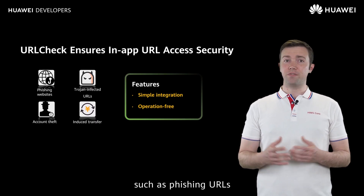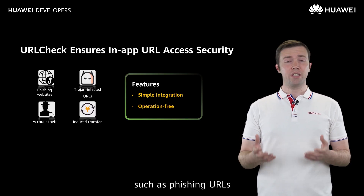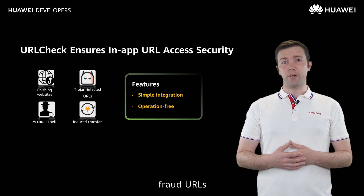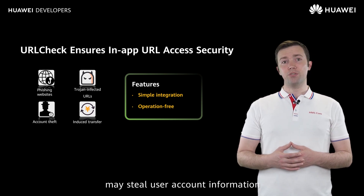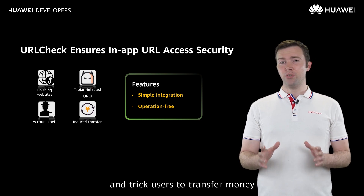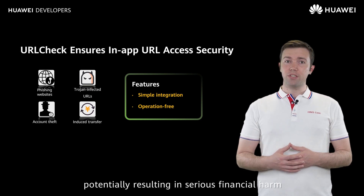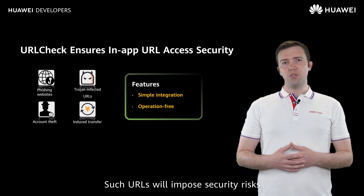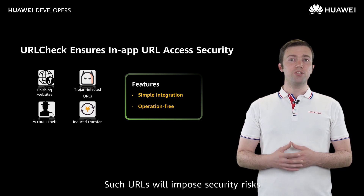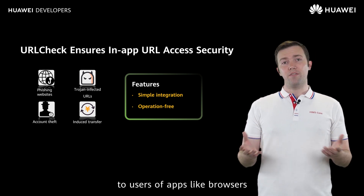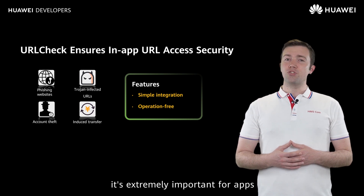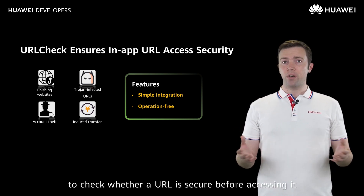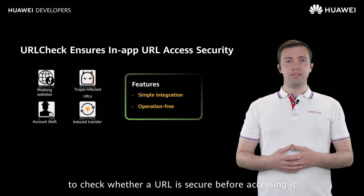Malicious URLs such as phishing URLs, fake URLs, and fraud URLs, and Trojan-infected URLs may steal user account information and trick users into transferring money, potentially resulting in serious financial harm. Such URLs impose security risks to users of apps like browsers. Therefore, it's extremely important for apps to check whether a URL is secure before accessing it.